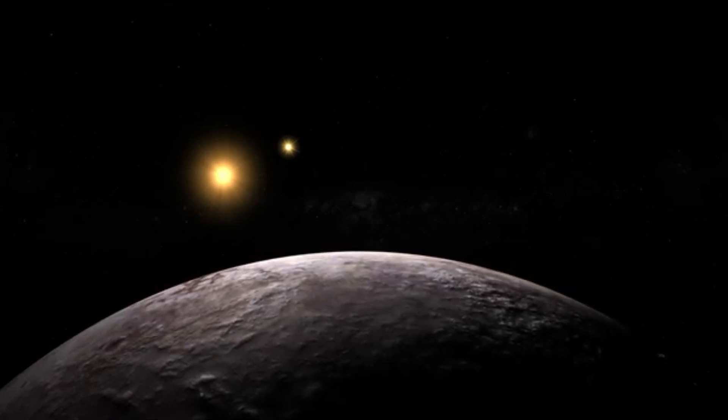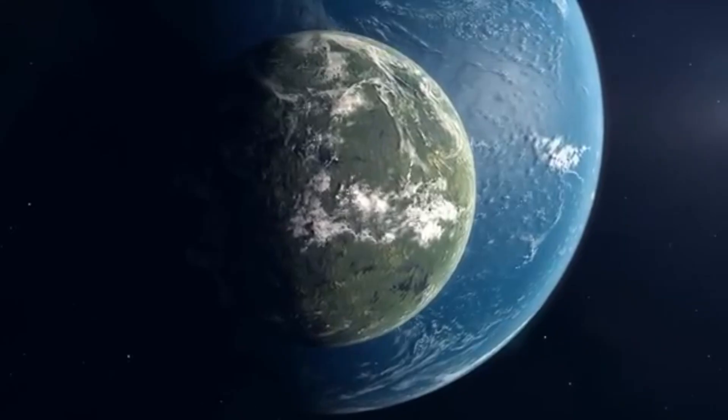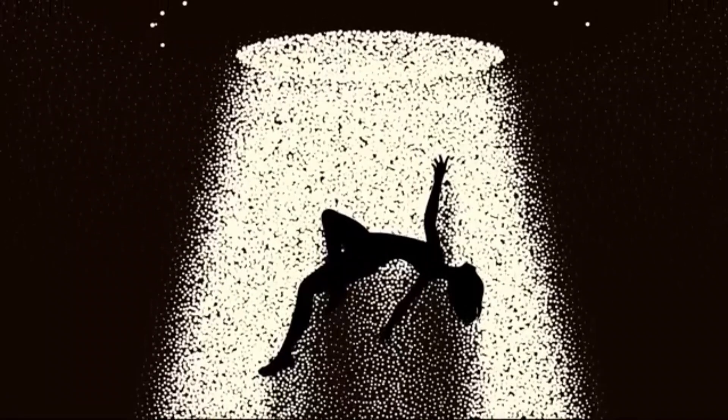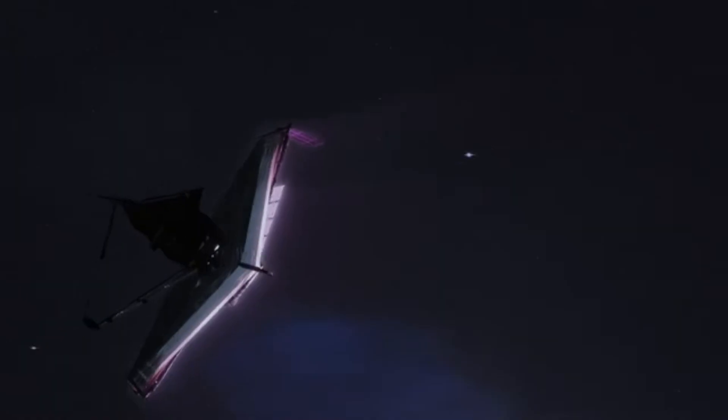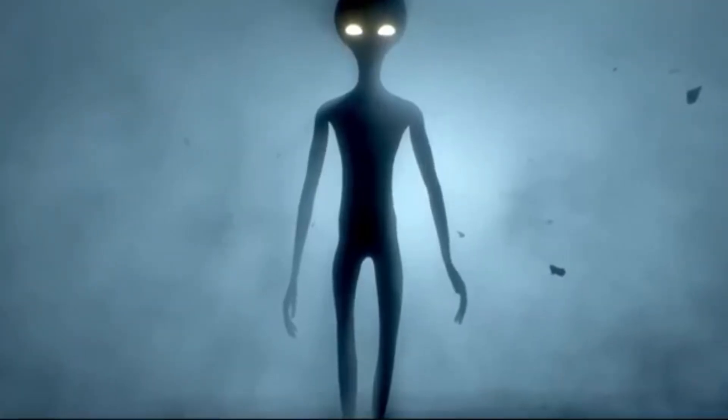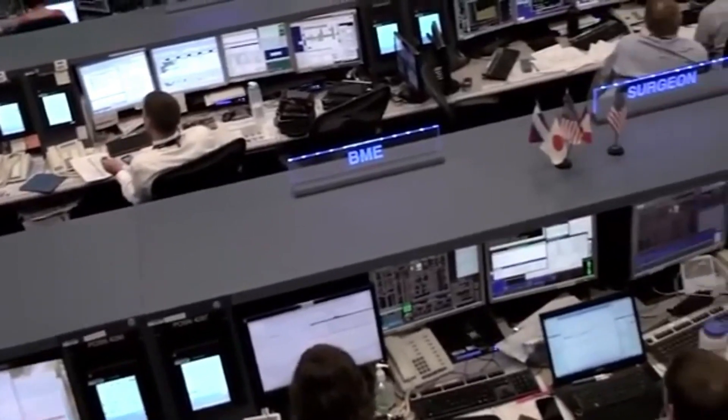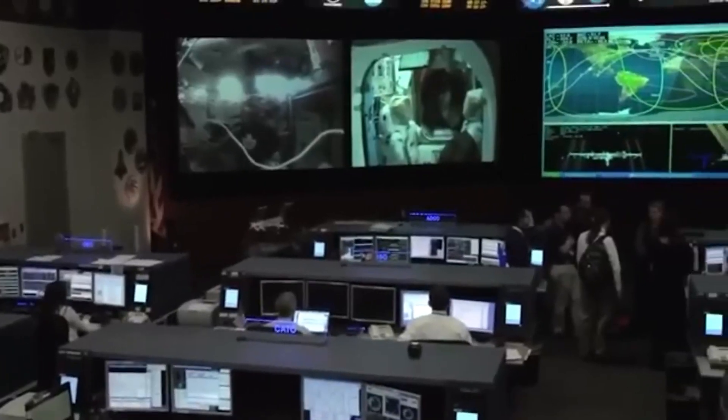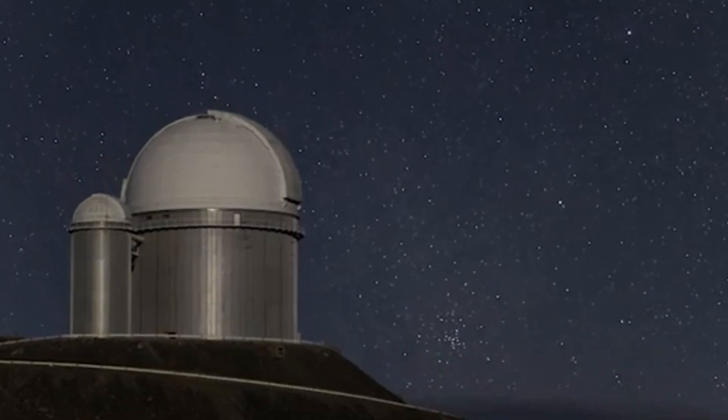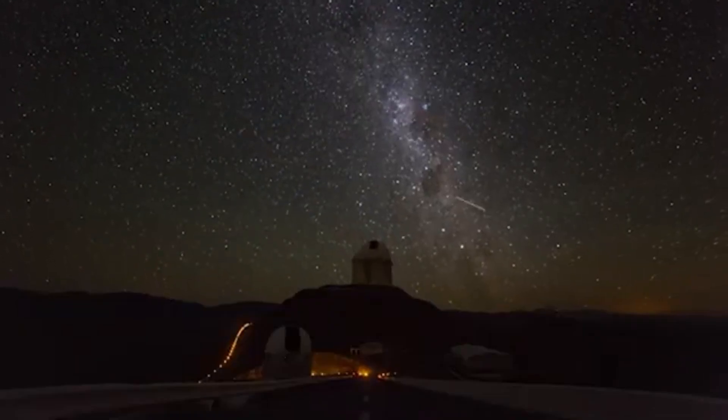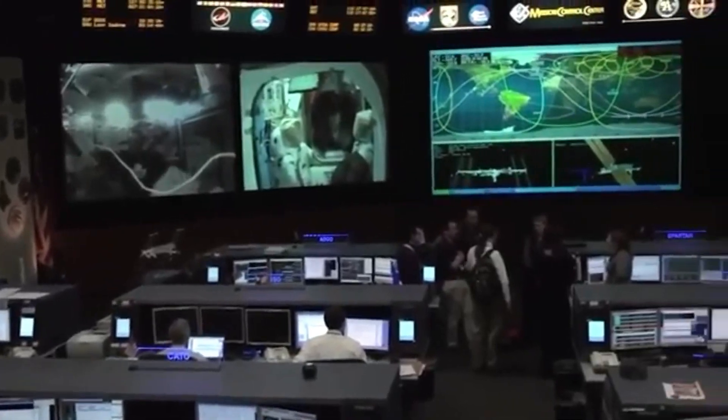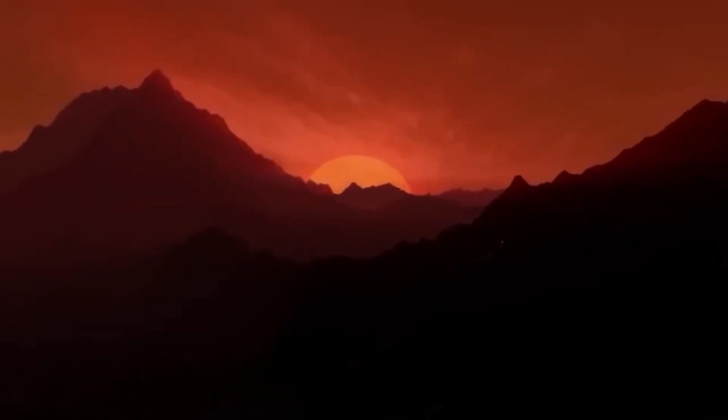The distance between Earth and Proxima b is 4.24 light years. Though that's enormous by Earthly standards, in space terms, it's practically next door. At this time, Proxima b is tidally locked and moves in sync with the rest of the solar system. To put it plainly, there is always light on one side of Proxima b and total darkness on the other.